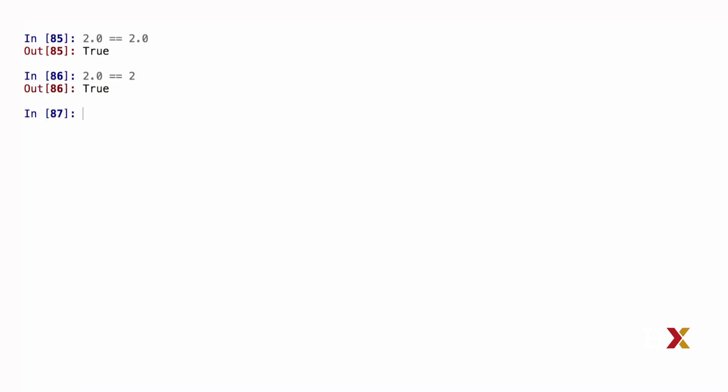How do we test equality between a floating point number and an integer? Testing 2.0 == 2.0 returns True. But what about 2.0 == 2, where 2.0 is a float and 2 is an integer? Python implicitly converts the integer 2 to the floating point number 2.0, so we are effectively comparing 2.0 to 2.0, and the answer is True.